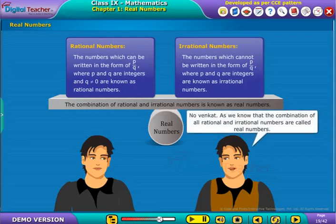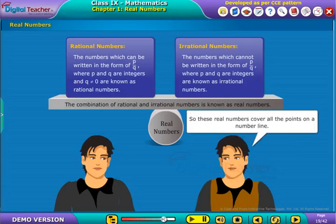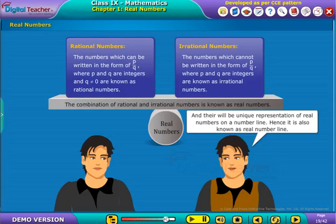No, Venkat. As we know that the combination of all rational and irrational numbers are called real numbers, these real numbers cover all the points on a number line. And there will be unique representation of real numbers on a number line. Hence, it is also known as real number line.